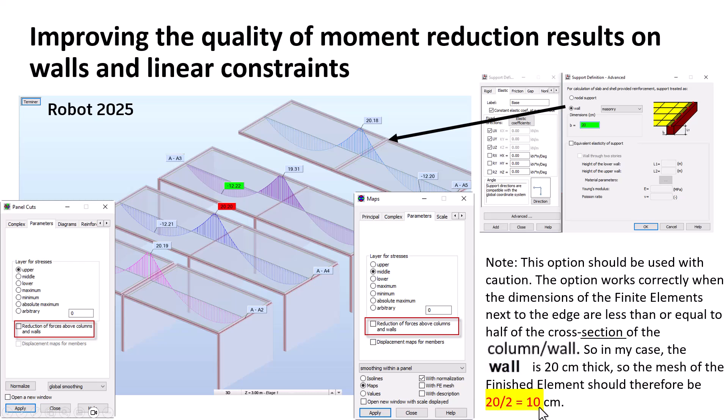So if you want this to work properly, you need to have half locally on the support, half of the size of the support, in finite element. Half of the cross section.